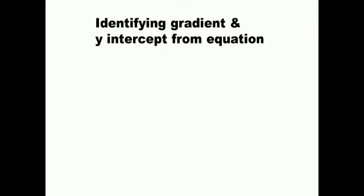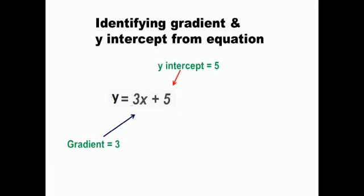Now find the gradient and y-intercept from the equation y is equal to 3x plus 5. What is the gradient? The coefficient of x — which is the number standing near to x — is 3. So gradient is equal to 3. Then what is the y-intercept? That is c, which is equal to 5. 5 is the y-intercept. Do you understand? It is a very simple and easy topic.